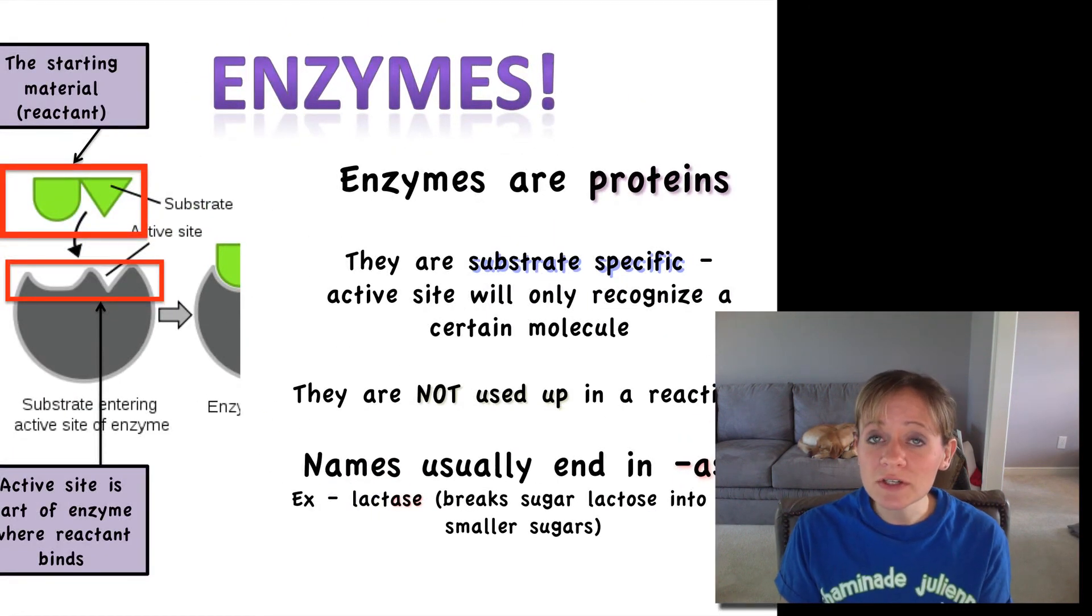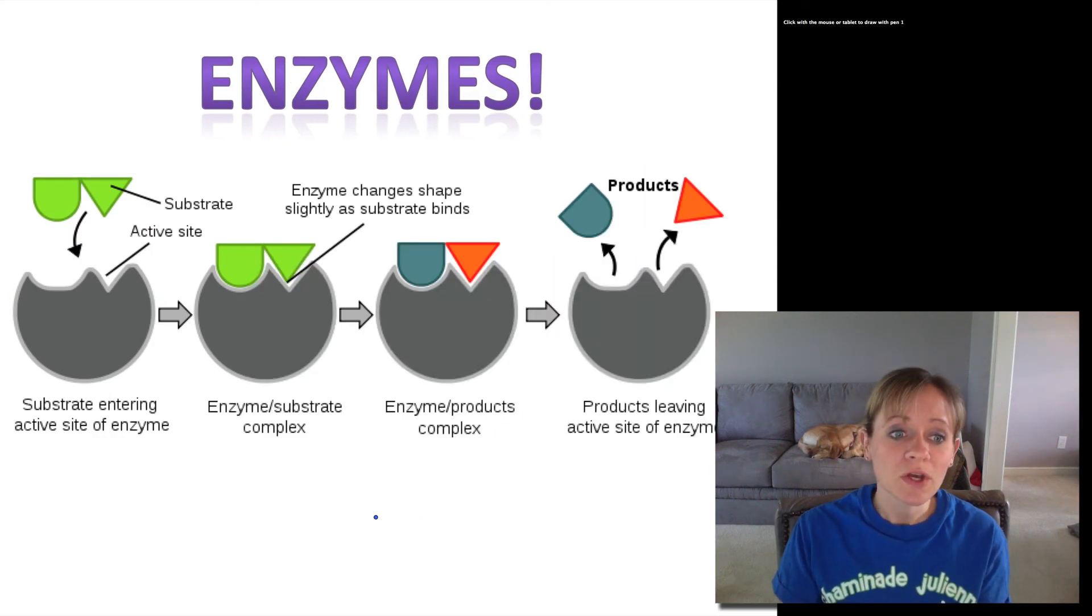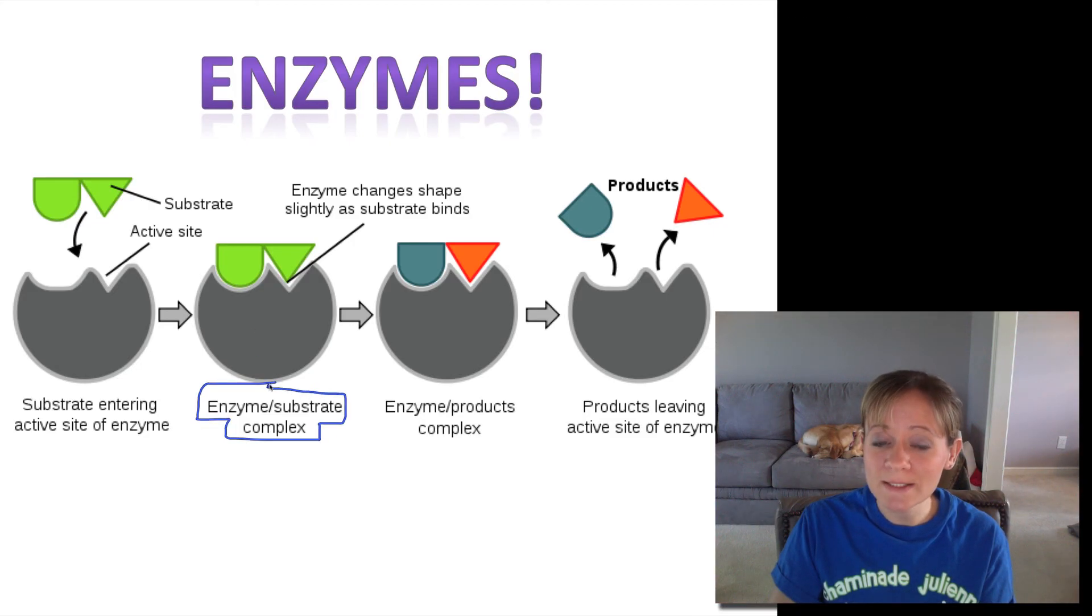Okay. One more figure here about how enzymes work, and hopefully this will put it all together for you. So we're going to start over here. Just here's our enzyme with our active site. Here's our substrate. And the substrate is going to bind to the active site. We now call this the enzyme substrate complex.